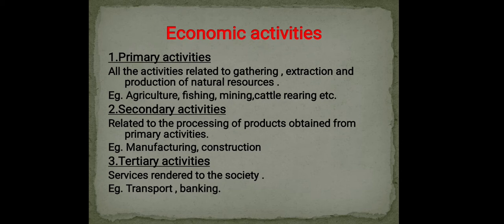Primary activities, as the name suggests, are activities related to gathering, extraction, and production of natural resources — basically obtaining raw materials. They include the production of basic food and raw materials. Examples are agriculture, fishing, mining, and cattle rearing.